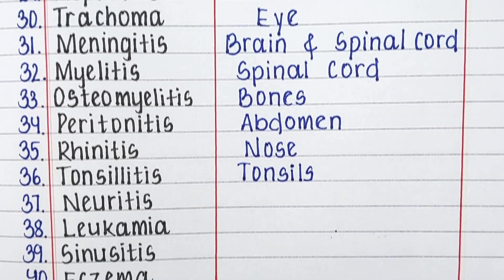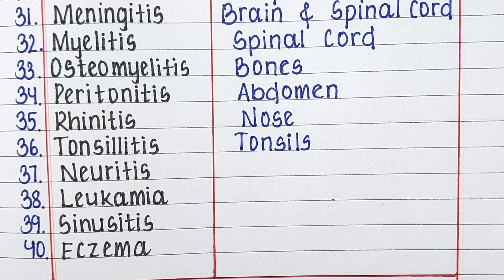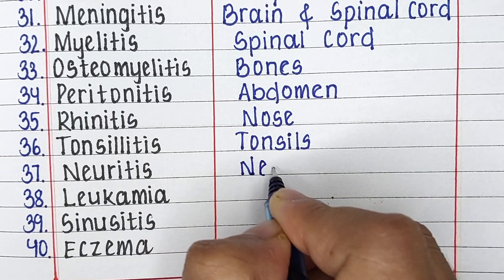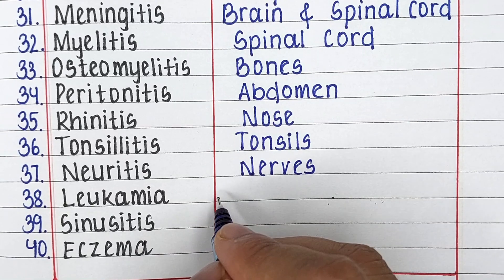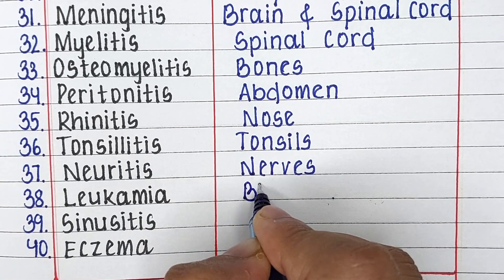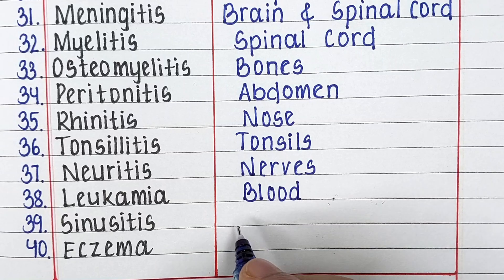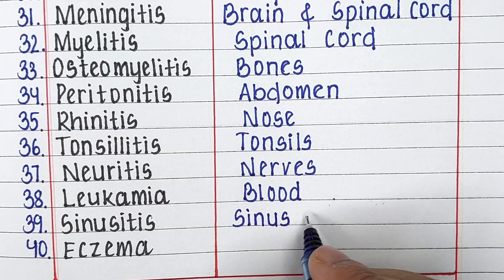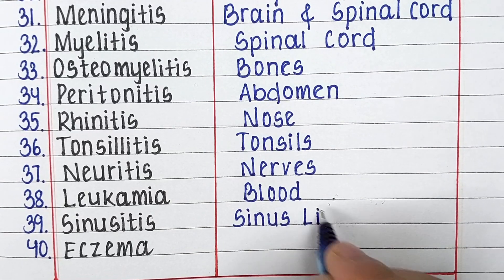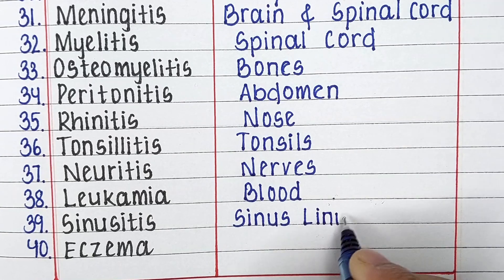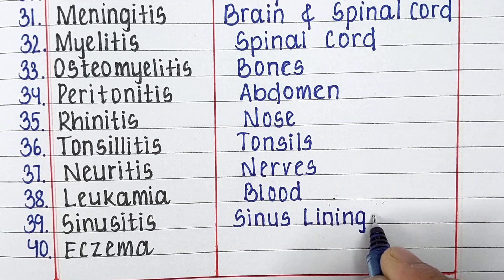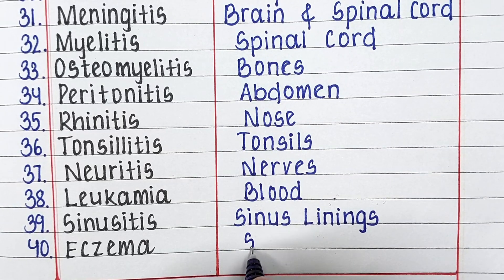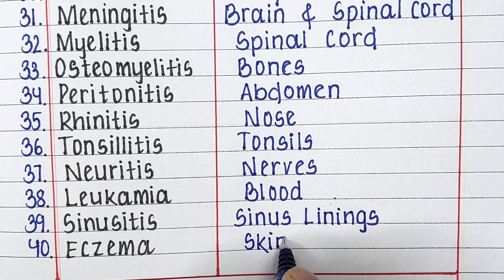Tonsillitis — this disease affects the tonsils. Next disease in our list is neuritis. It is a disease related to nerves. Next up we have leukemia. It is a disease related to blood. Next is sinusitis. It affects the sinus linings. Last disease is eczema. It affects the skin of the human body.